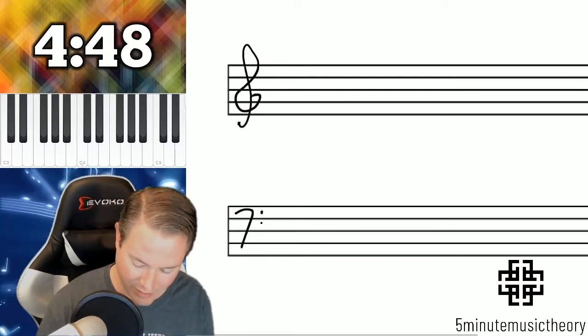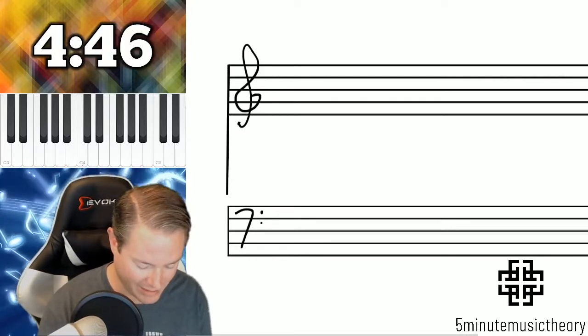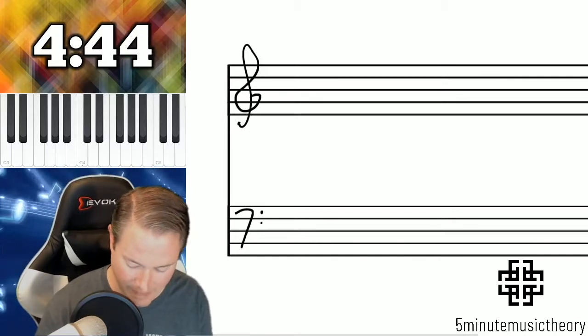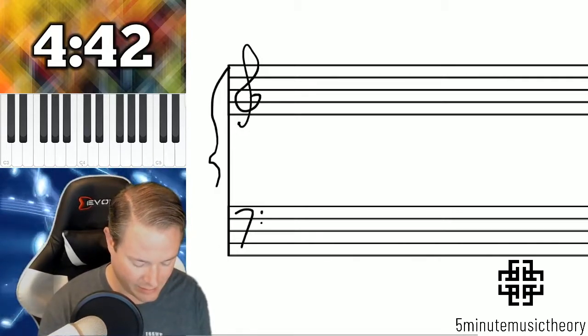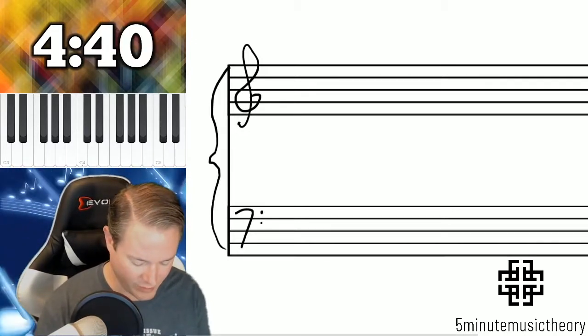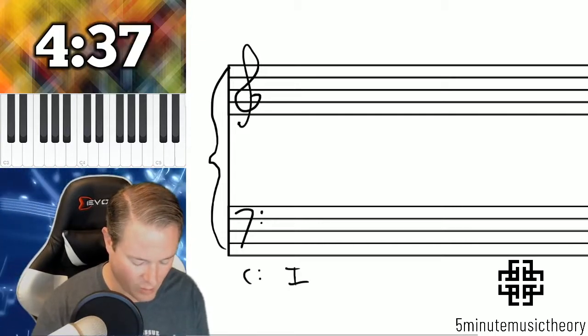And remember, when we're talking about circle of fifths, we're implying a descending circle. So let me make a nice little grand staff here and we'll stay in C major and we're going to start with a tonic chord.